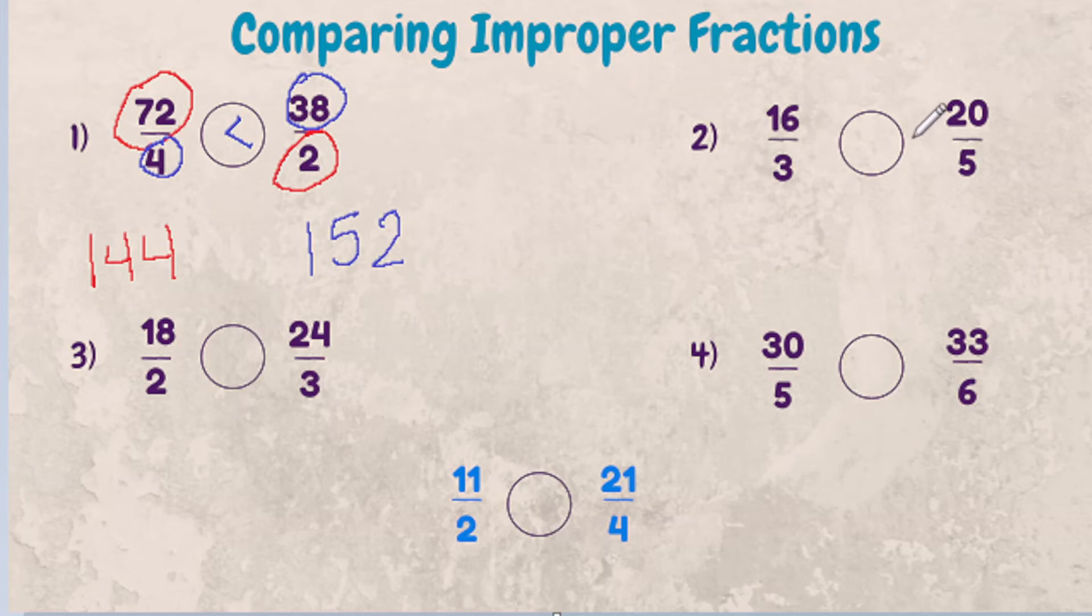So let's look at 16 thirds compared to 25ths. First step, we're going to take our 16 times 5 and we're going to get a result of 80 and we're going to put it on this side.